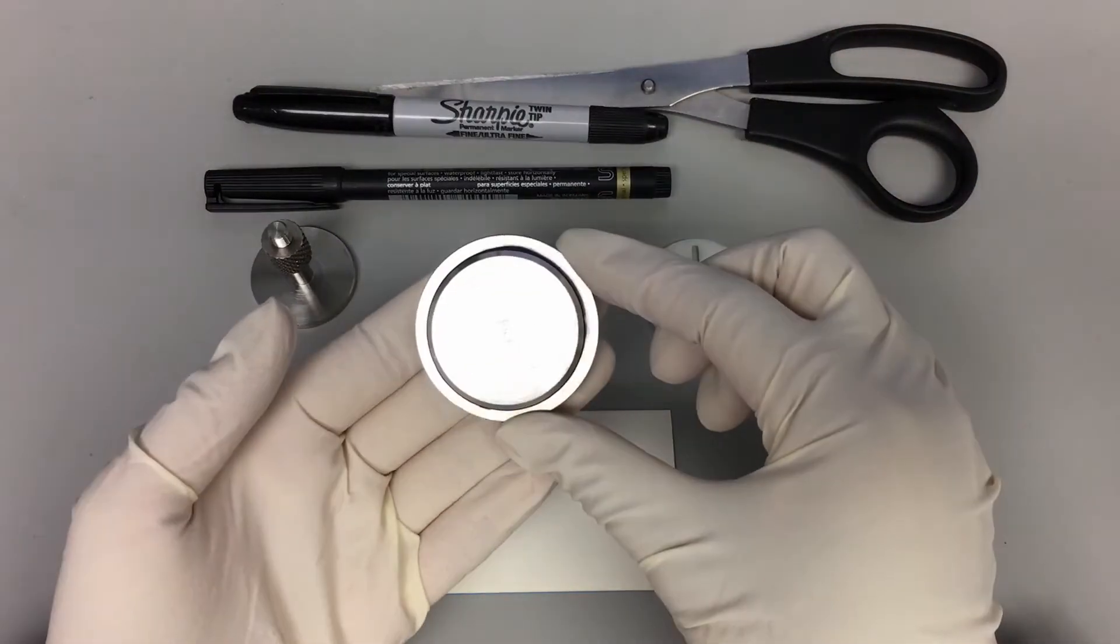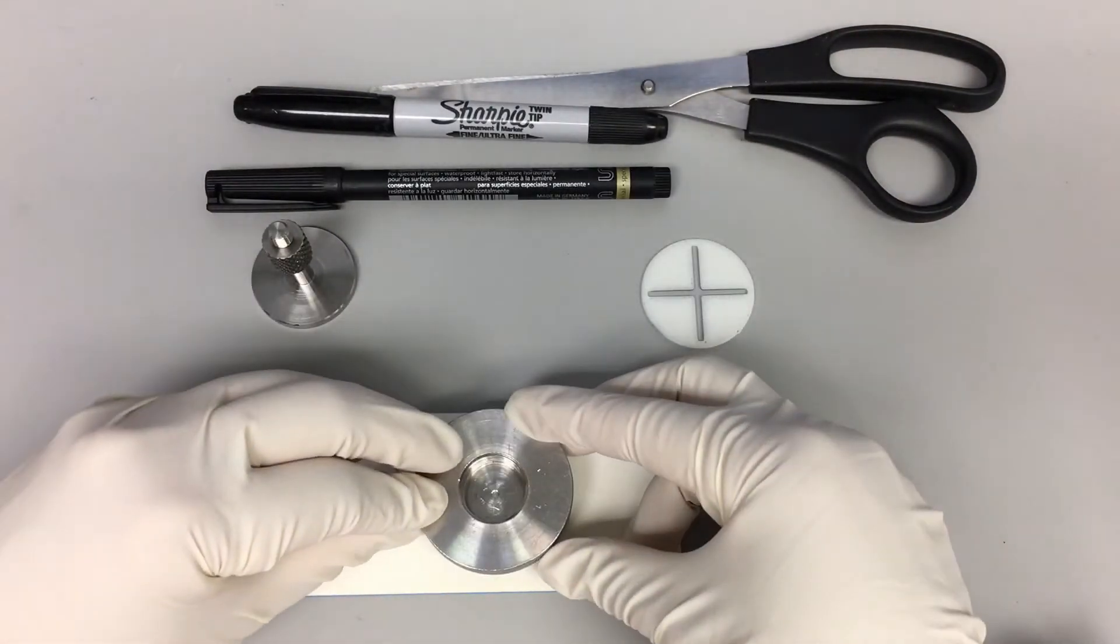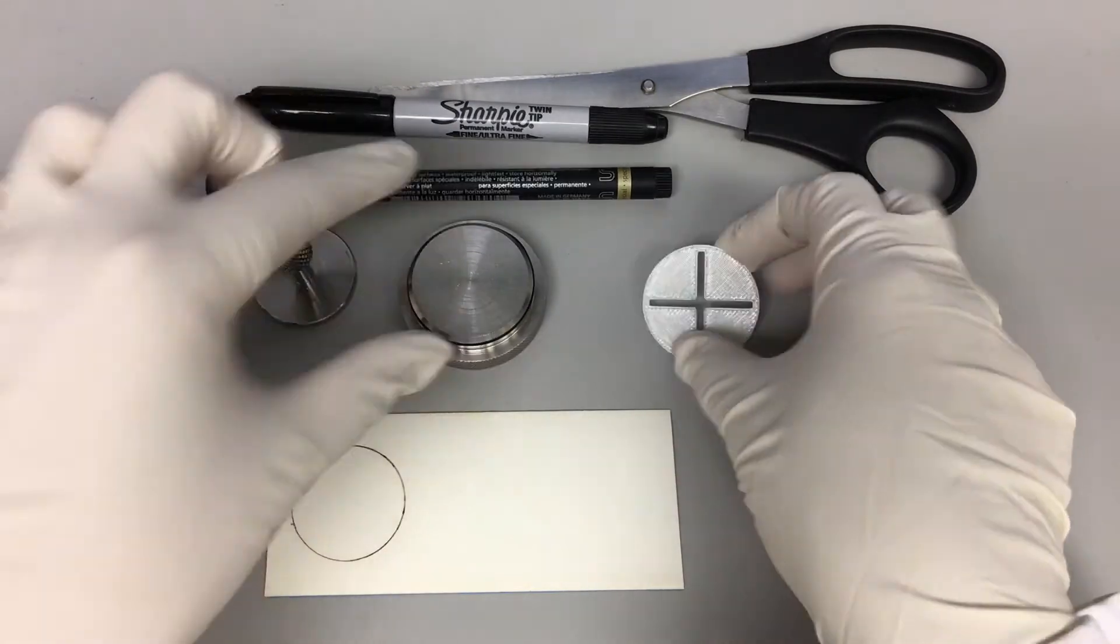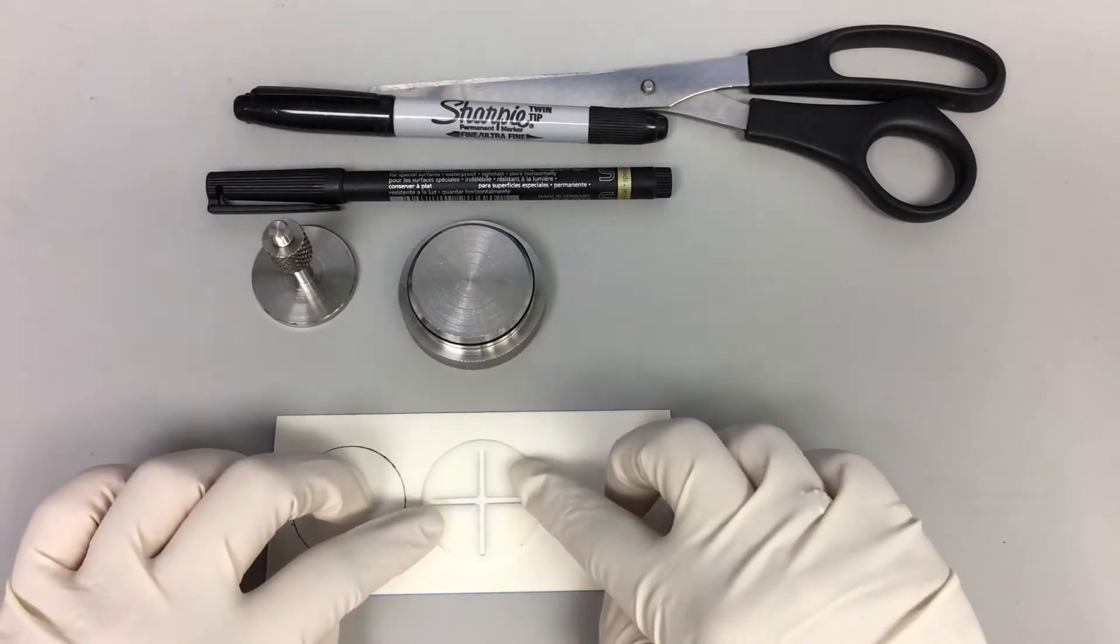Next, trace the outline of the top face of the sample holder by inverting it on the back side of the sandpaper or by using a circular stencil with a diameter of 37mm.